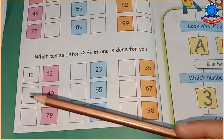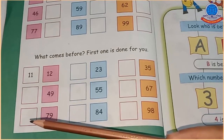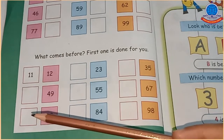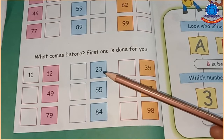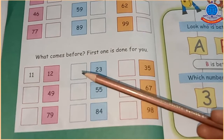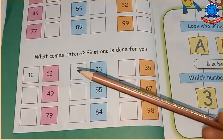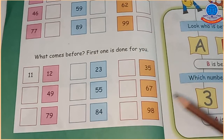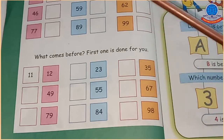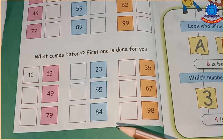79 से पहले क्या आता है? 78 आता है, तो यहाँ पर 78 लिखेंगे। इसी तरह 23 से पहले क्या आता है? 22 आता है, जी हाँ 22 खाली box में लिखेंगे।